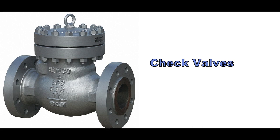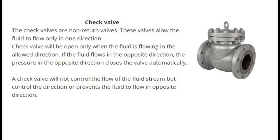Check valves are non-return valves that allow fluid to flow only in one direction. The valve opens only when fluid flows in the allowed direction. If fluid flows in the opposite direction, the pressure automatically closes the valve. A check valve does not control the flow rate but controls the direction, preventing fluid from flowing in the opposite direction.